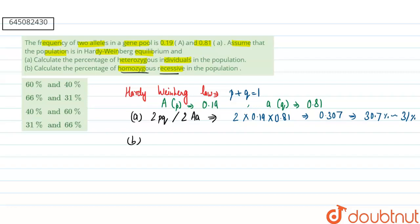Homozygous recessive condition means basically we are talking about q squared, or we can say small a squared. So our value of small a will be 0.81.